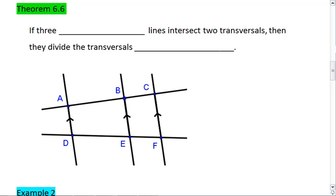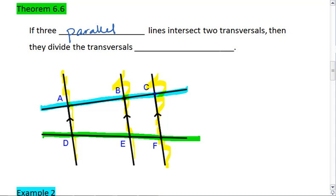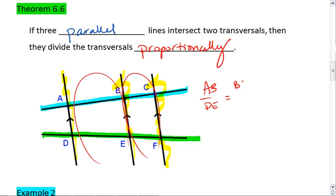Theorem 6.6 tells us that if we have three parallel lines intersect two transversals. In the figure below we have three parallel lines in yellow which are intersecting our two transversals. Then they divide the transversals proportionally. Meaning that AB to DE equals BC to EF.